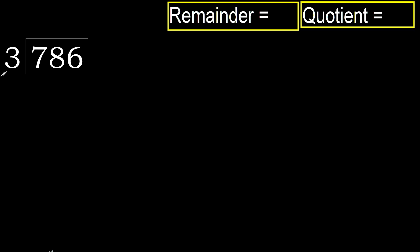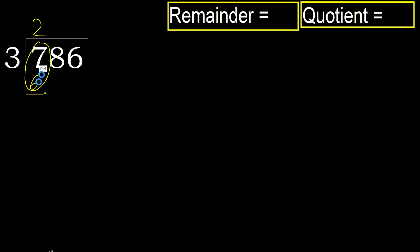786 divided by 3. 7 is not less, therefore start with 7. 3 multiplied by which number is nearest to 7 but not greater? 3 multiplied by 3 is 9, which is greater. Multiply by 2: 6 is not greater. Subtract: 7 minus 6 is 1. Next.